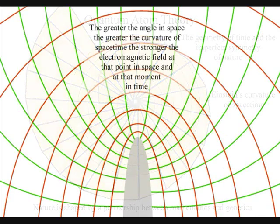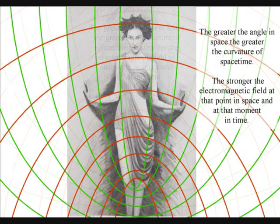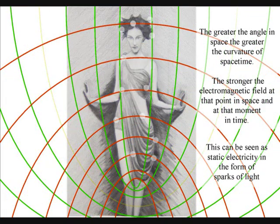The greater the angle in space, the greater the curvature of space-time, the stronger the electromagnetic field at that point in space and at that moment in time.